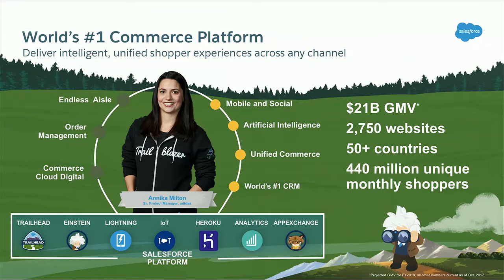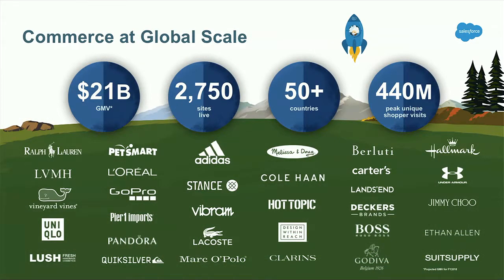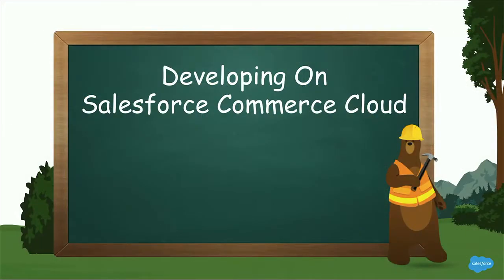We're doing this at scale. Over the last year, Commerce Cloud powered over $21 billion in merchandise sold across 2,700 websites, over 50 countries, and powering over 440 million unique monthly shoppers. We're doing that for leading brands like Ralph Lauren and Adidas — who you saw yesterday in the keynote — empowering them to deliver customized, personalized, and unified shopping experiences. We want to show some examples of customers who are doing this.